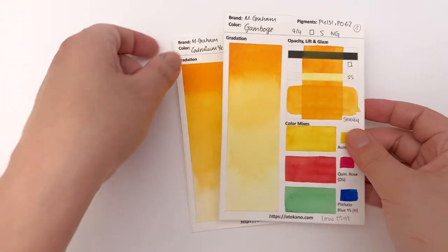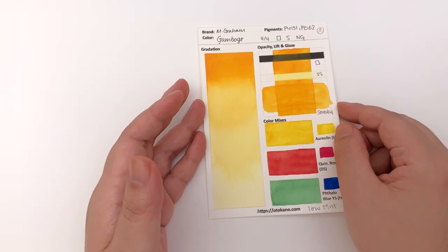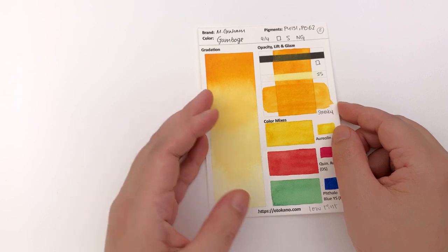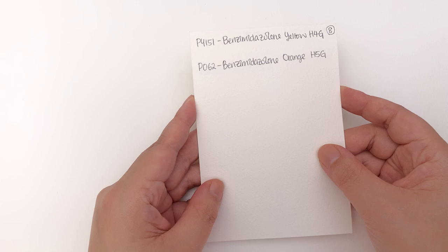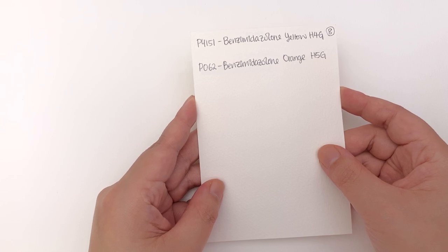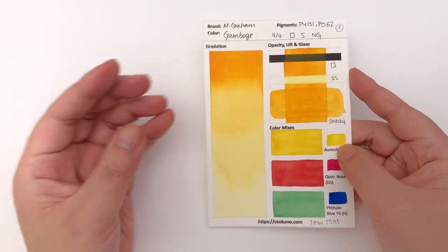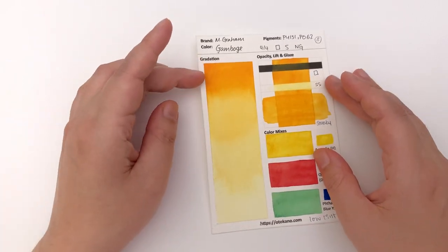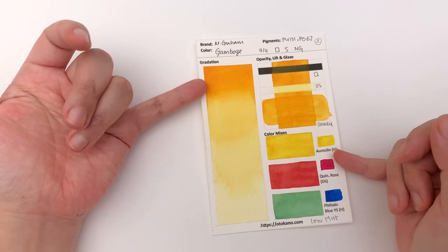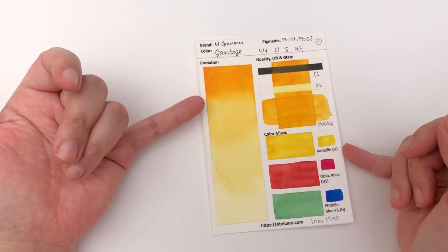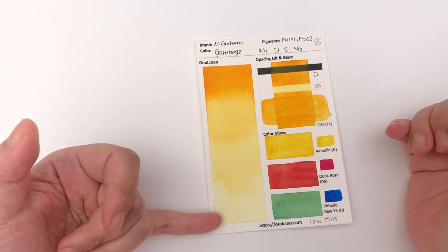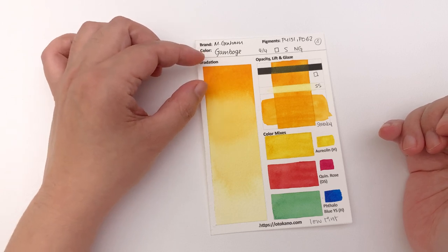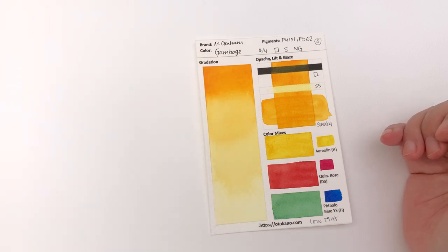Then we have the gamboge which is a mixture of two pigments PY151 and PO62 that is the benzimidazolone yellow H4G and the benzimidazolone orange H5G and this definitely has a lot of texture in it. You can see in the mass stone here there's lots of texture happening. It's not granulation though and it goes away as the color lightens up. I would say I see one, two, three and four stages.